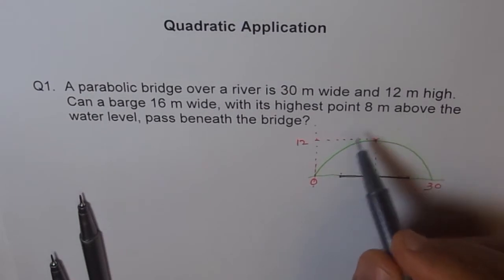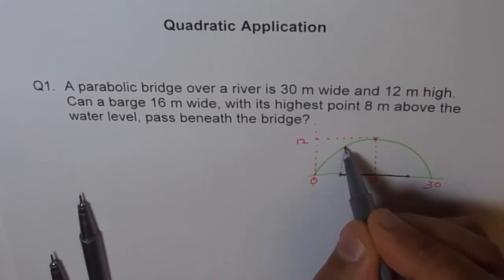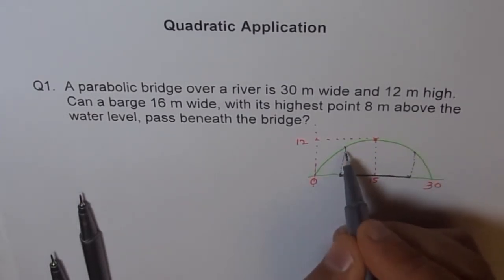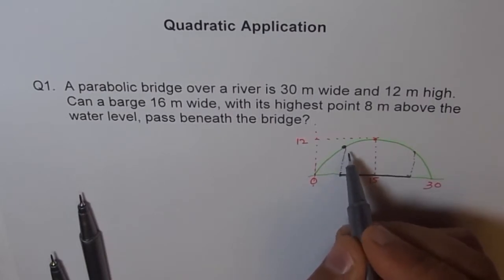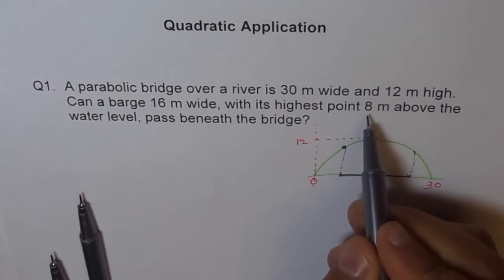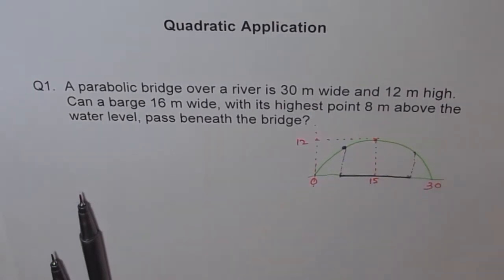The highest point is 8, and the lowest point for our bridge is actually on the edges. So what we need to find is, at this point on our parabola, do we have a height of 8 meters plus so that the boat can go through. So this is the problem. I hope you understand what we're trying to do here.